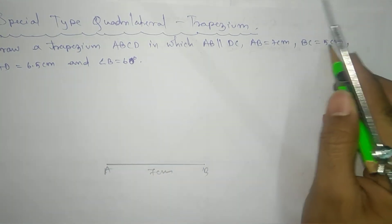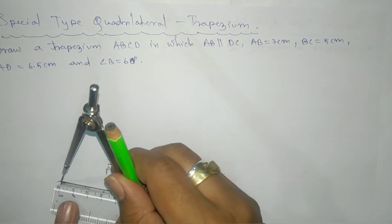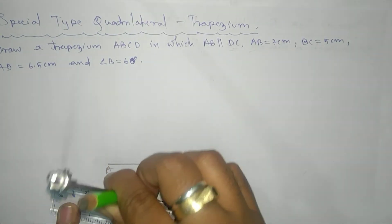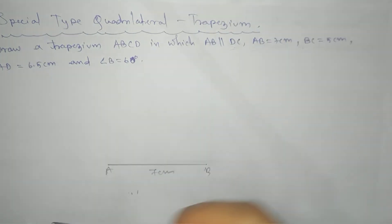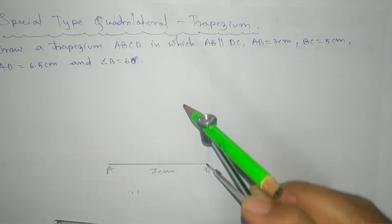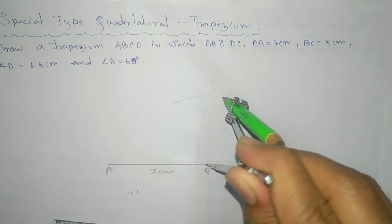After that, there's BC, 5 cm. Go for the BC, 5 cm. So here the measurement, this is your 5 cm. Get an arc for 5 cm. This is your BC somewhere.